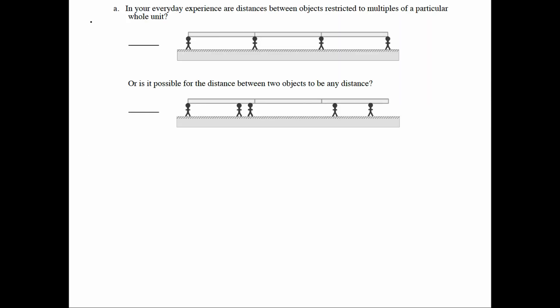But this brings up a fundamental problem when it comes to measurement. In your everyday experience, are distances between objects restricted to multiples of a particular whole unit, or is it possible for the distance between two objects to be any distance? Which one seems more true, the top one or the bottom one? I'll say no to the top one, and yes to the bottom one.